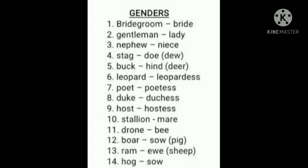Tenth one: S-T-A-L-L-I-O-N, stallion. M-A-R-E, mare. Here horse animal — the male we can call stallion and the female we can call mare. Like camel also, we can call the same: stallion and mare. For both horse and camel, female is M-A-R-E, mare, and male is stallion.